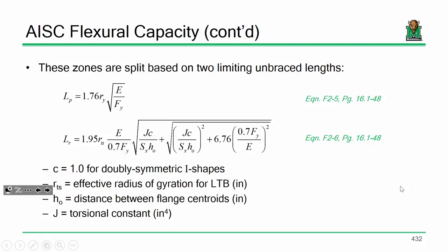The equations, particularly like L sub R, they look fairly nasty. Actually, the easier one on the slide to derive is L sub R because L sub R is basically setting the equation that we derived equal to 70% of the yield moment and just solving for L. It's just algebra, actually, to solve for L sub R.